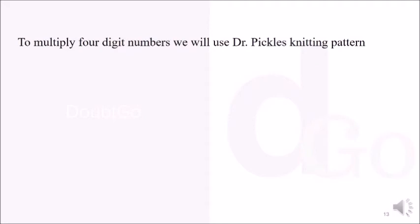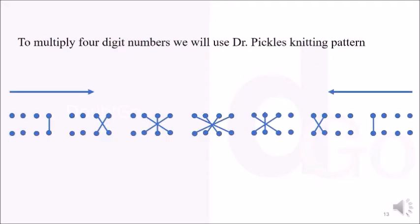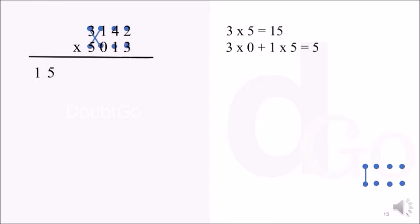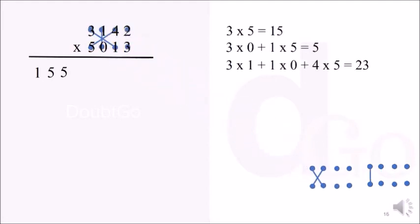For multiplying even larger numbers, we can use Dr. Pickle's knitting pattern. For 4-digit numbers, we use this pattern and can go from left to right or right to left depending on our convenience. So we will multiply 3142 and 5013. Each dot represents a number and the line joining them stands for the digits to be multiplied. In the first pattern, 3 × 5 gives 15, so we write 15. In the second pattern, 3 × 0 plus 1 × 5 gives 5, so we put 5. In the third pattern, 3 × 1, 1 × 0, and 4 × 5 add up to 23 — we put 3 and carry 2.